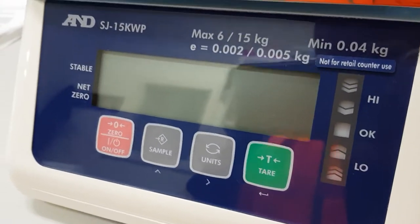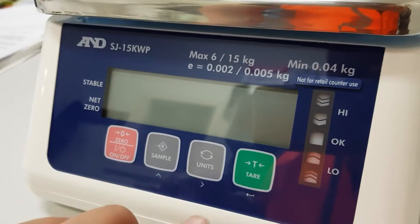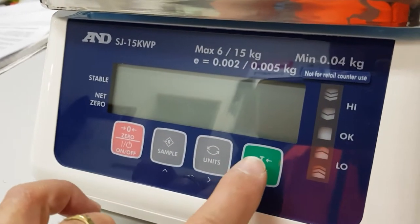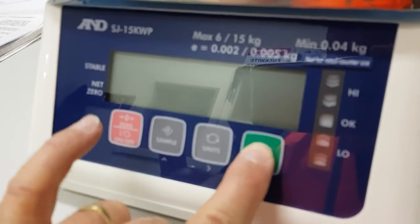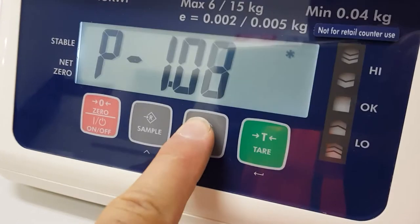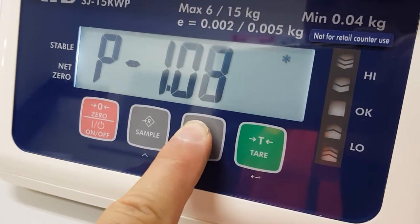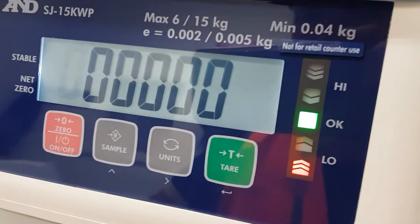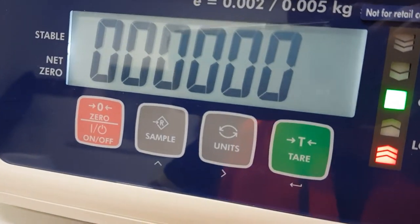To get into the target settings, we touch the tare key and while touching that, we turn on the scale. You'll see the software version come up, and while that's displayed, press and hold the units key, and then the low value setting screen comes up.